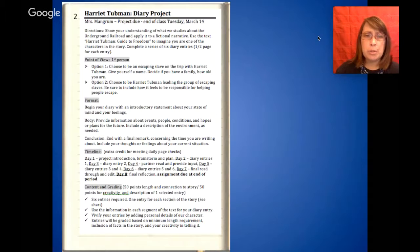Point of view is going to be first person. You are going to be a character in the story. Option one: Choose to be an escaping slave on the trip with Harriet Tubman. Give yourself a name. Decide if you have a family, how old you are. Option two: Choose to be Harriet Tubman leading the group of escaping slaves. Be sure to include how it feels to be responsible for helping people escape.